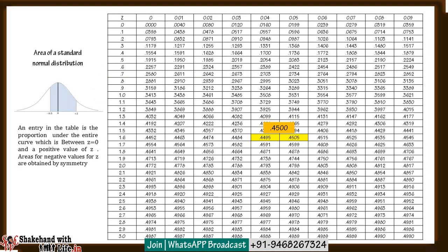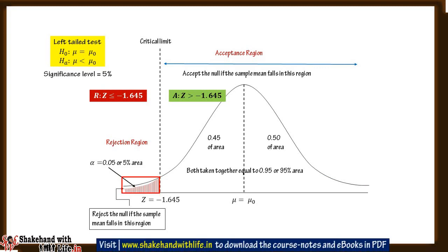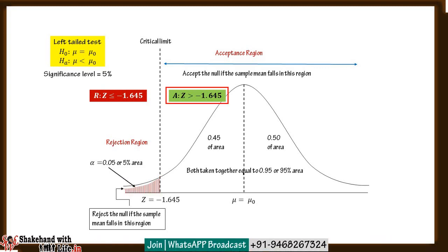To find the area under the normal curve for z equal to 1.645, you may refer to the table of area under the standard normal distribution in any book of business statistics. Here minus 1.645 is the critical value. If the test statistic z comes out greater than minus 1.645, the null hypothesis remains in the acceptance region. If it comes out less than or equal to minus 1.645 at 5% significance level, the null hypothesis falls in the rejection region. Mathematically: acceptance region A is z greater than minus 1.645, and rejection region R is z less than or equal to minus 1.645.